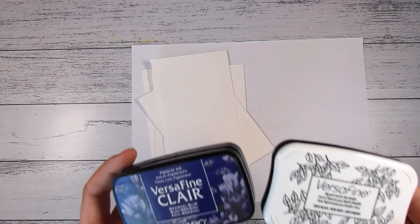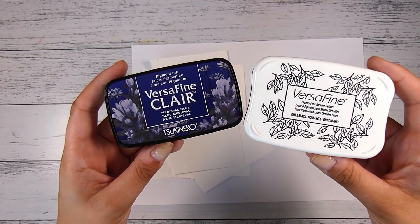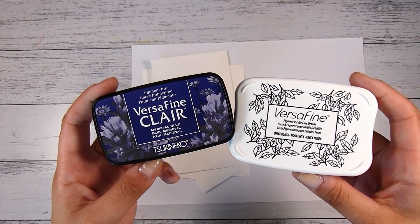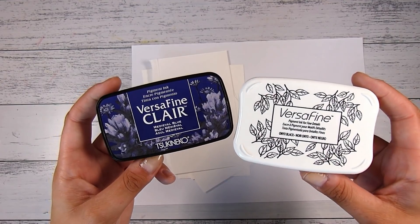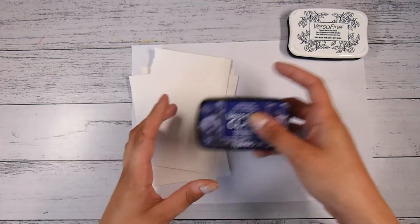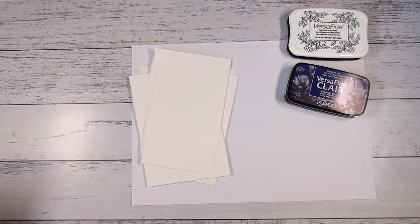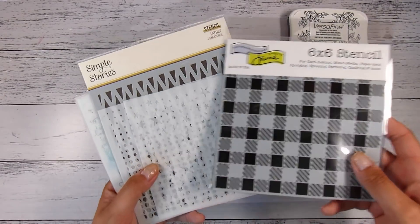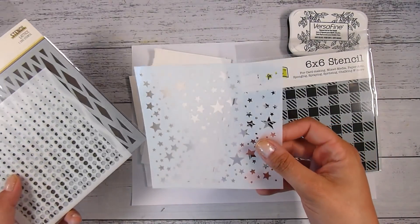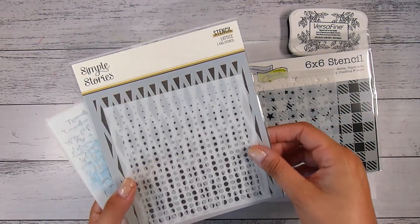I'm going to be using two different inks today and that's it. This is actually going to create two separate cards. On the right is the Versafine Onyx Black ink, and on the left is the Medieval Blue color in the Versafine Clear range. Then I went through my stencil stash and picked out a whole lot of stencils.